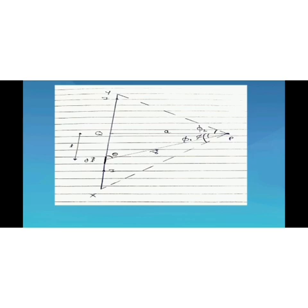The position vector R makes angle theta with the straight conductor. First of all, we will apply Biot-Savart law for the small current element. Then we will integrate it from lower limit minus φ₁ to upper limit φ₂. After integration, we will have the total magnetic field due to the long straight current-carrying conductor.